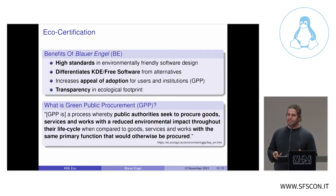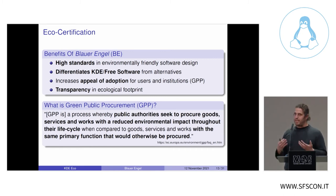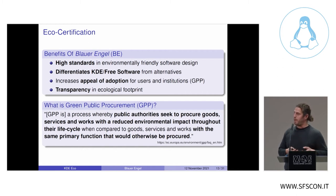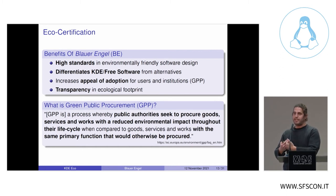Why are we interested in Blauer Engel? There are many benefits. When you receive the eco-label, it recognizes that you have high standards in environmentally friendly software design. It differentiates KDE and free software from the alternatives. It increases the appeal of adoption for users and institutions — for example through green public procurement, which is the process whereby public authorities seek to procure goods, services, and works with a reduced environmental impact throughout their lifecycle. And it shows transparency in the ecological footprint of the software.